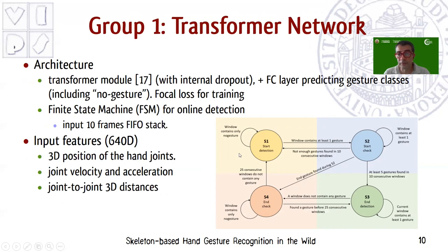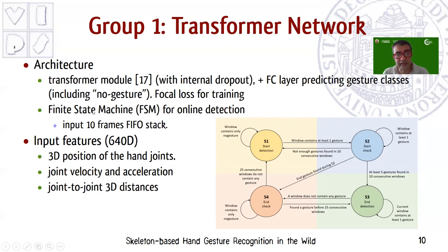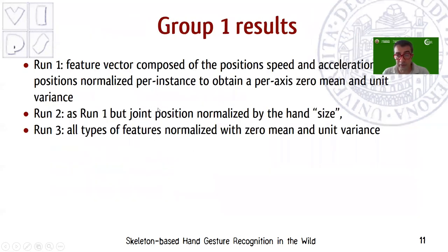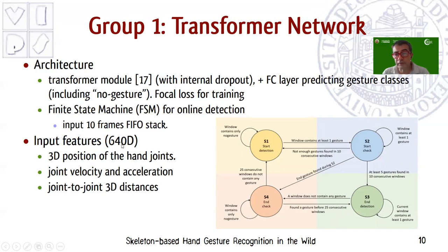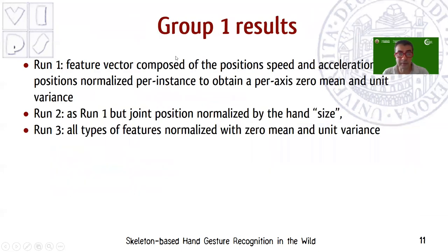The method proposed by group one is based on transformer networks. It applies a transformer module and then a fully connected layer to predict gesture classes, including non-gesture labels. They used focal loss for training to cope with the class imbalance between gesture and non-gesture examples, and they refined the output label sequences using a finite-state machine. The group proposed three runs characterized mainly by differences in input features: 640 features including 3D positions of hand joints, joint velocity and acceleration, and joint 3D distances.